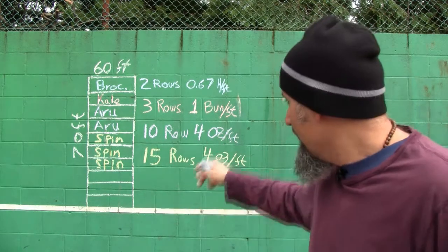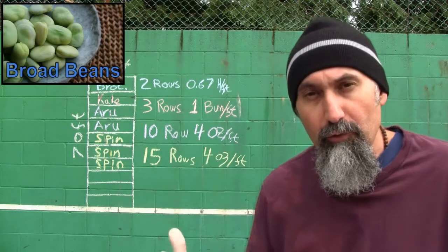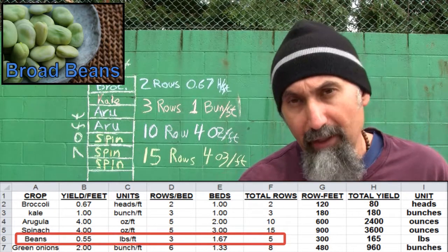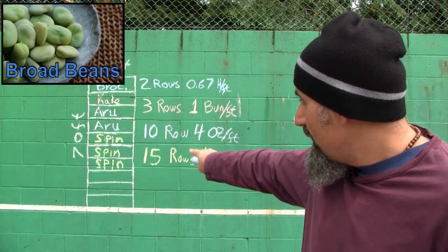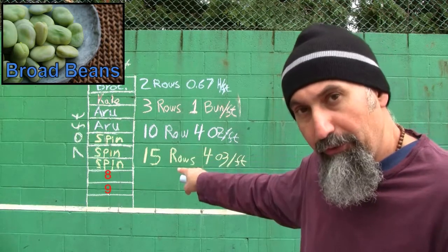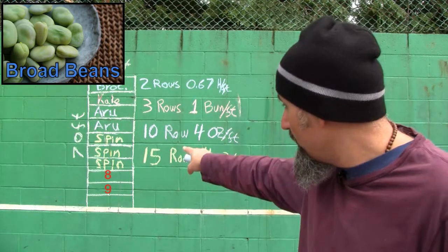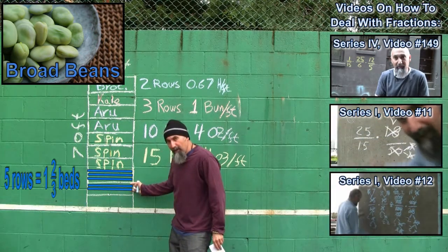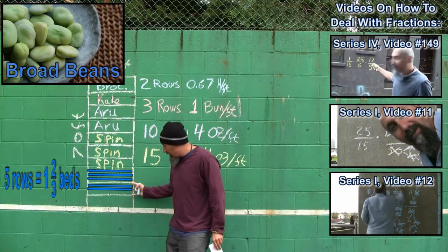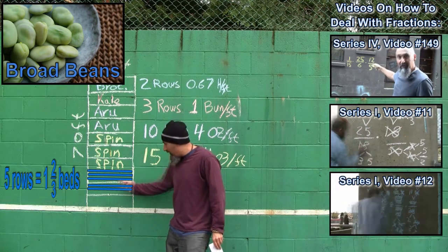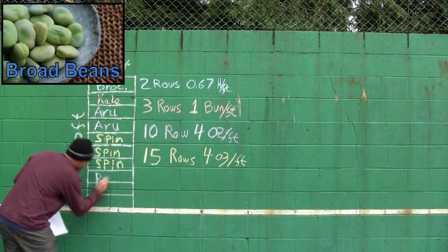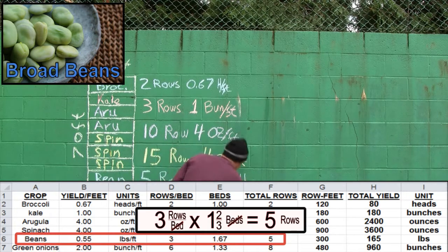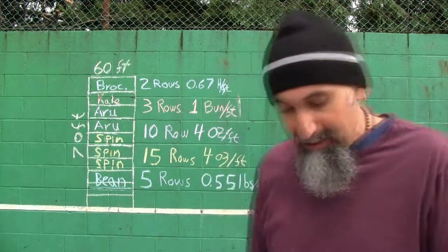For the next three beds, we're going to mix it up a bit. We want to grow five rows of beans, and the spec is three rows per bed. So we're going to use bed number eight and two-thirds of bed number nine to grow beans — three rows in bed eight and two rows in bed nine. That takes up two-thirds of bed nine because if you can put three in a full bed, two is two-thirds. The yield for beans is 0.55 pounds per foot.